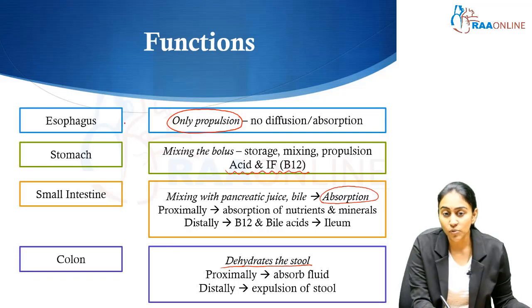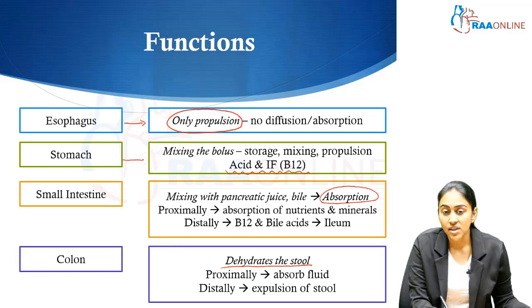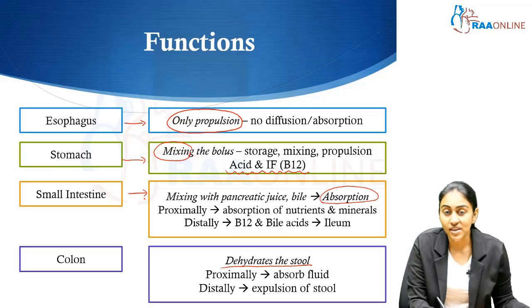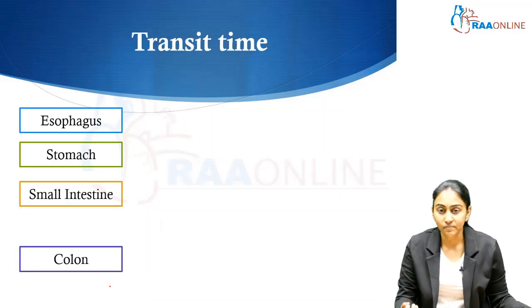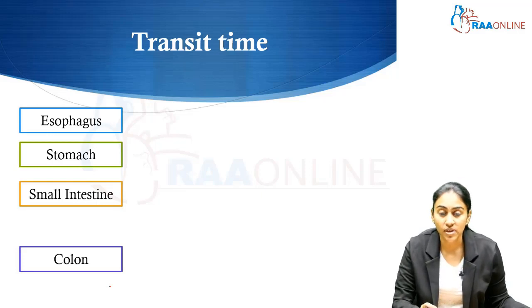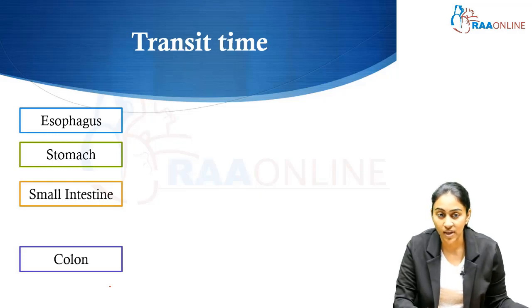So the esophagus predominantly works as a conduit and propels the food into the stomach. The stomach plays an important role in mixing the food bolus with the acid. The small intestine is where all the absorption takes place, and finally the colon, where a large amount of fluid is absorbed and the stool is dehydrated and devolumized. The transit time of the food bolus differs widely across different parts of the gastrointestinal tract.